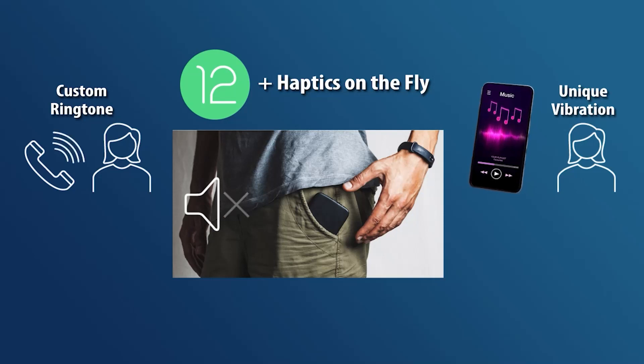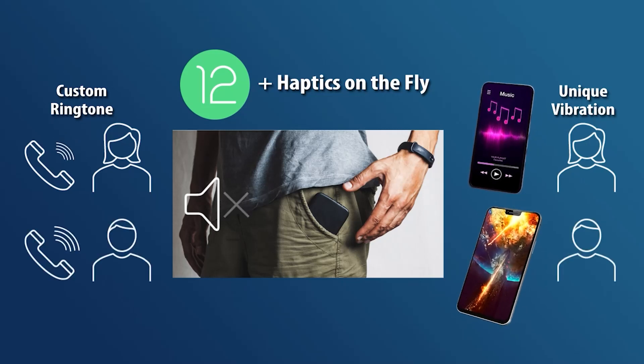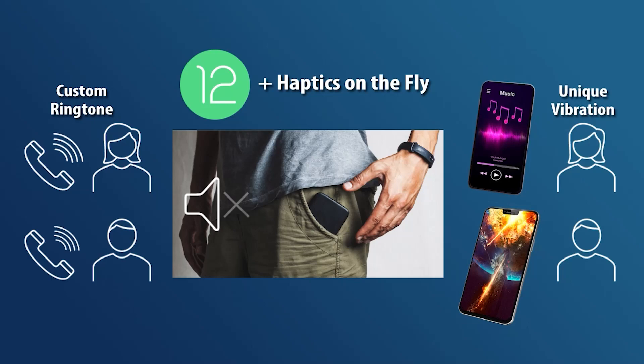A simple example: you can now tie a custom ringtone to a particular caller, and that custom ringtone can generate a particular haptic feedback or vibrate pattern. If you're in a meeting with the audio off and the phone in your pocket, a particular haptic pattern tells you it's someone you don't need to answer right now. But if someone important rings with a different ringtone, it will vibrate differently and you can tell instantly this is a call you can't miss, so you can excuse yourself from the current situation.